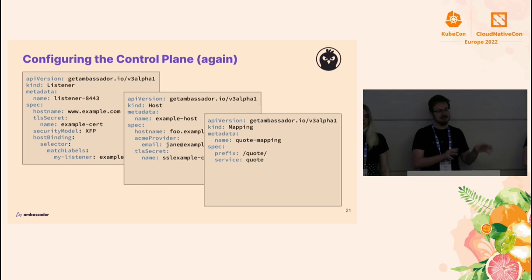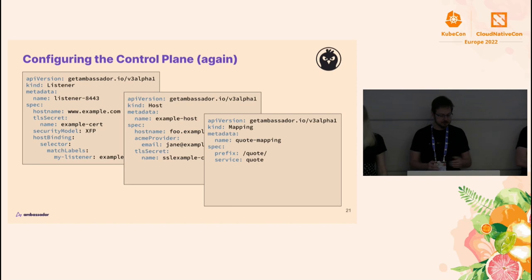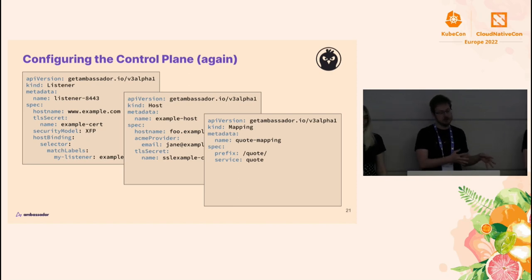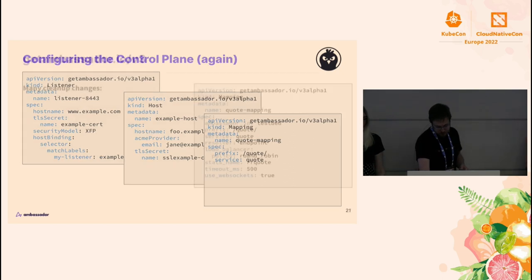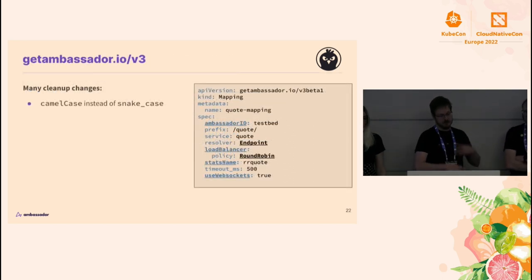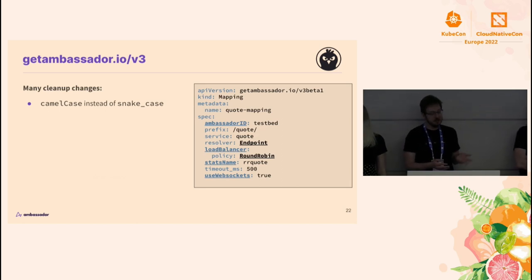Because we didn't have any real conversion mechanism to convert between versions, we could only make additive changes. Now with v3 Alpha 1, which we also introduced in 2.0, we have a real conversion mechanism, and that's allowing us to make changes we've wanted to make for a long time in order to clean up the interface. One of the most obvious is transitioning a lot of fields that were snake_case to camelCase, to be more consistent internally and more consistent with everything else in Kubernetes.